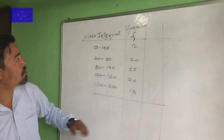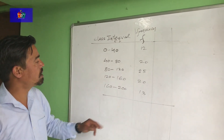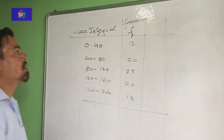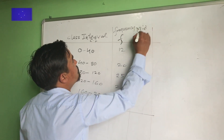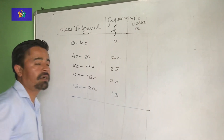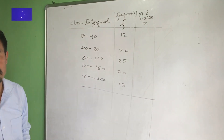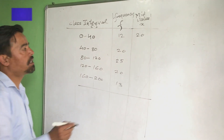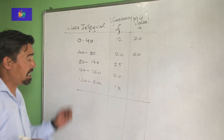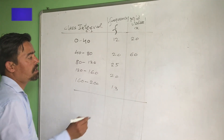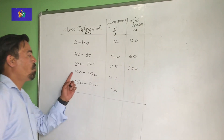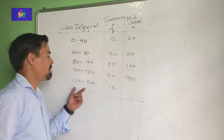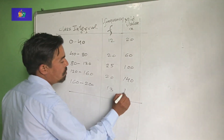Class intervals: 0 to 40, 40 to 80, 80 to 120, 120 to 160, 160 to 200. Frequencies: 12, 20, 25, 20, 13. Computing mid values X: 0 plus 40 divided by 2 is 20. 40 plus 80, 120 divided by 2 is 60. 80 plus 120, 200 divided by 2 is 100. 120 plus 160, 280 divided by 2 is 140. 160 plus 200, 360 divided by 2 is 180.